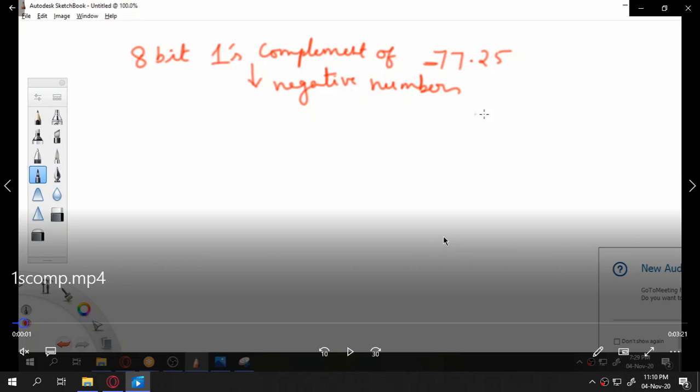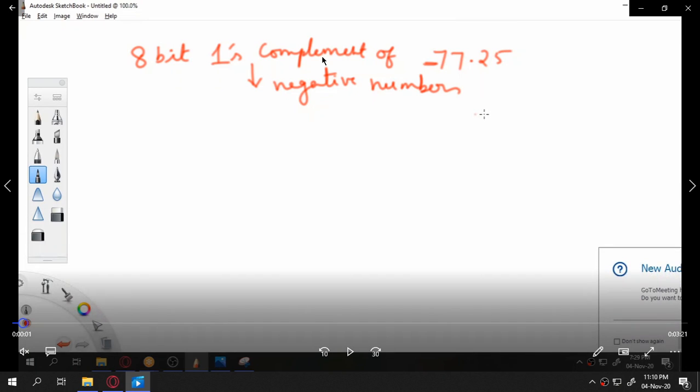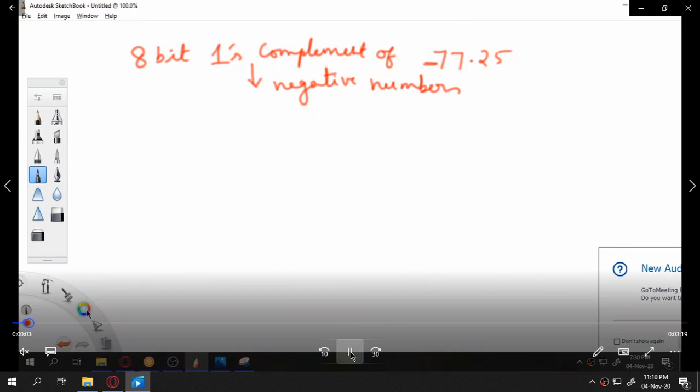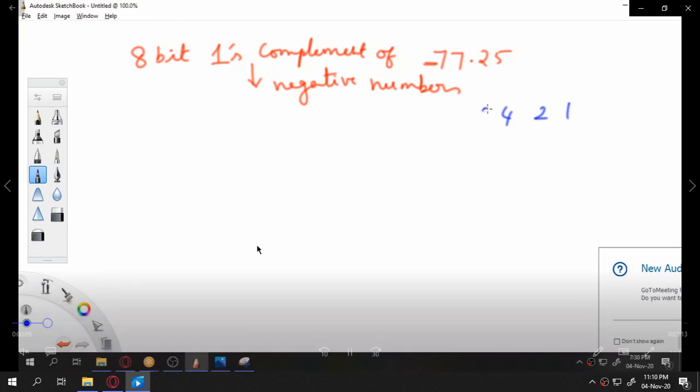Hello everyone, in this video we are going to see how to represent a negative number minus 77.25 as an 8-bit 1's complement number. We all know that negative numbers are represented using the complement - that may be 1's complement or 2's complement or 9's complement or 10's complement. Complement numbers are mainly used for representing negative numbers as well as to perform subtraction.